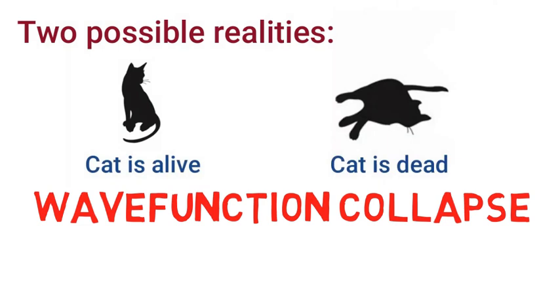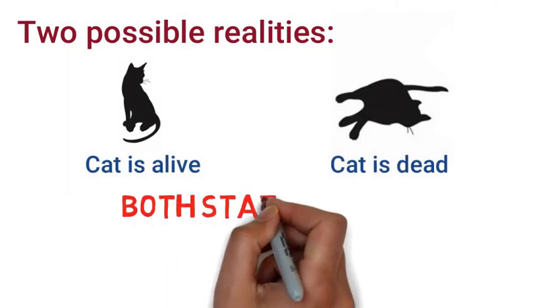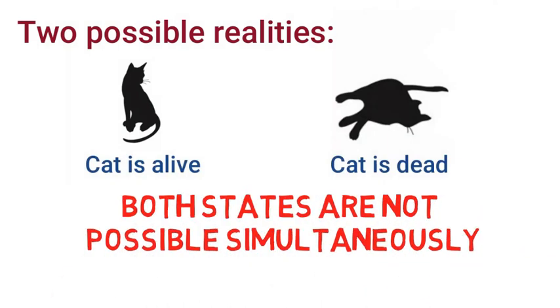From this we can say that superposition exists till the point we measure. After measurement, the superposition is not present and there is only one state. Like in Schrödinger's cat experiment, either the cat is alive or dead. Both things are not possible simultaneously. So after measurement our wave function collapses.